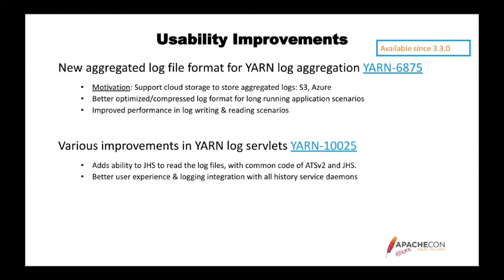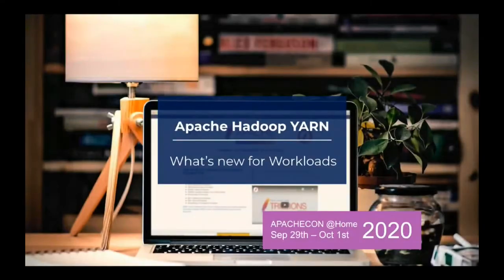We also have usability improvements in terms of log aggregation and YARN log servlets. Log aggregation is a mechanism to collect logs from containers to a centralized location. Traditionally it was HDFS, but as we push YARN towards cloud infrastructures, we realized we need S3 and Azure file systems as well, since not all deployments have HDFS at hand. We also have a new log aggregation file format that puts an index above the traditional T-file, providing fast access to logs and metadata, increasing performance.